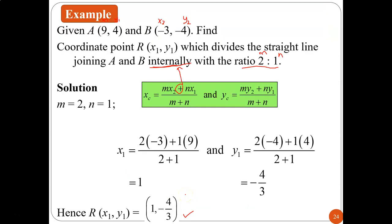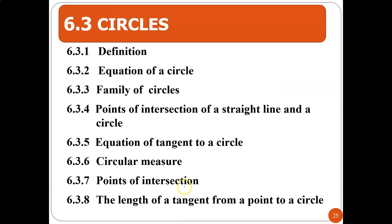That finishes our straight line subtopic. In straight line, you have learned three types of equations: general form (AX + BY + C = 0), gradient intercept form (Y = MX + C), and point-gradient form (Y − Y1 = M(X − X1)). You also learned how to find the midpoint, with two cases: internally and externally. You can refer back to the notes. See you.